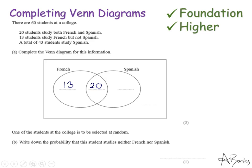Then it says a total of 43 students study Spanish. Now this is all of this circle, all of the students that study Spanish. It doesn't matter if they study French as well or not, it's this entire circle. So if this entire circle adds up to 43, we already have 20 in this section here. This number here must be 43 take away 20, which is 23.